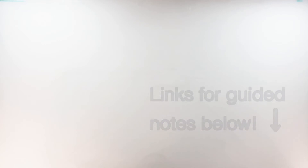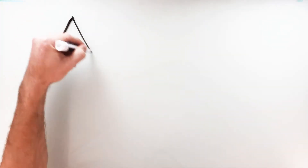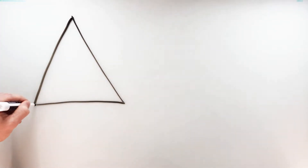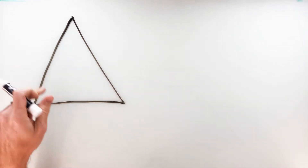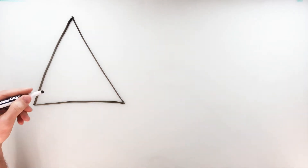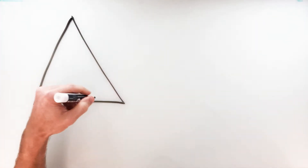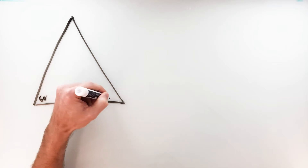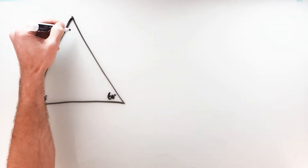Now to get at the second of the two special right triangles, we're going to start with an equilateral triangle. In an equilateral triangle, by definition, all sides are congruent, and thus all angles are congruent as well. So to get at these angles, you can take 180 divided by 3. That'll tell you that all these angles are 60 degrees.